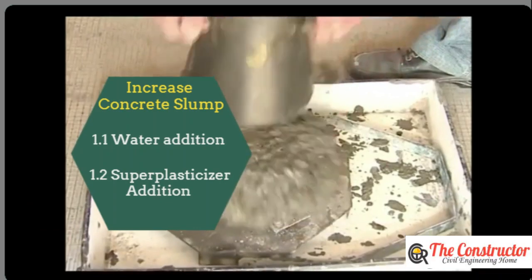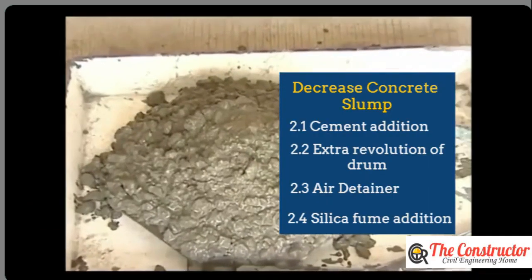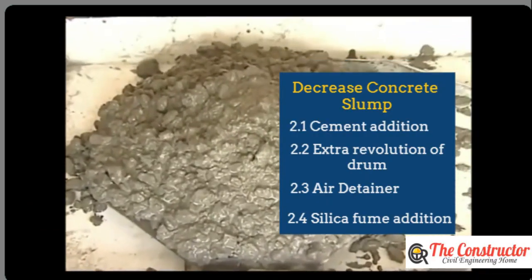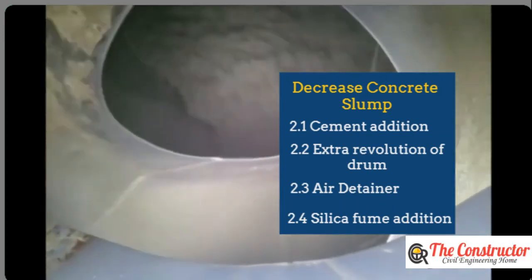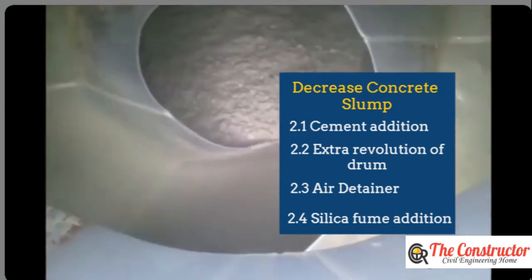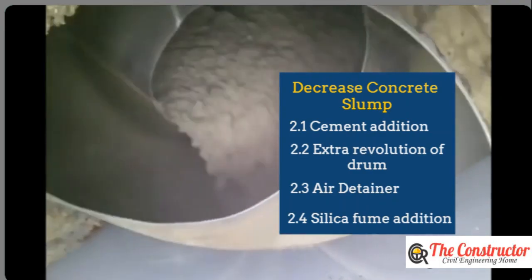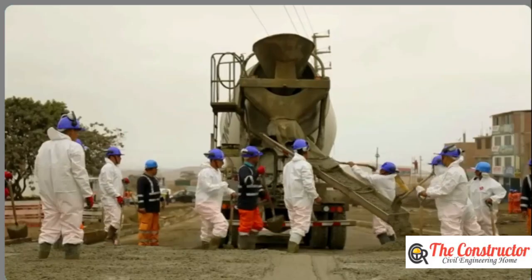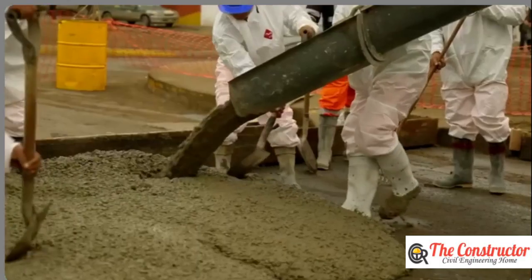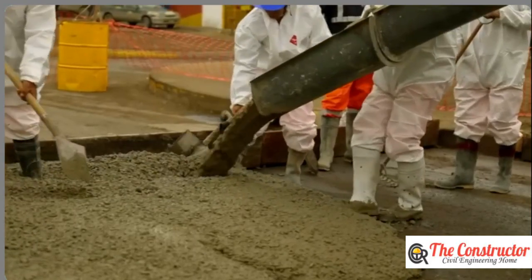However, if the slump value is high, adding cement to fresh concrete in the transit mixer, extra revolutions of concrete in the mixer, or introducing silica fume can tackle the problem. The slump adjustment is both expensive and time-consuming, and it may not always be effective.